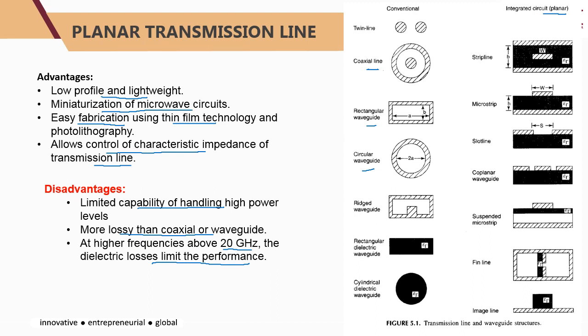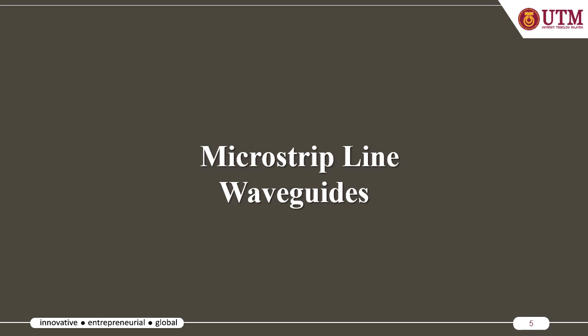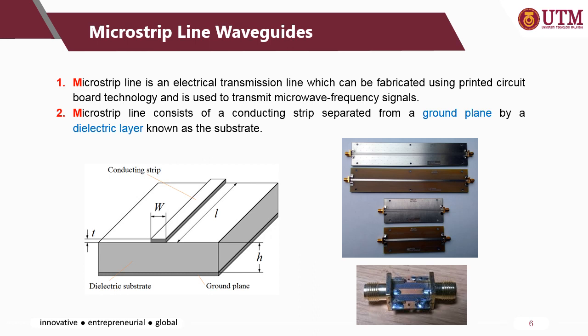We are about to discuss on the microstrip line, strip line, and co-planar waveguide as examples of planar transmission lines. The first one is the microstrip line waveguide. The planar transmission line is part of the waveguide, but since it is printed on the substrate layer, it is called a microstrip line or microstrip transmission line. The microstrip line is an electrical transmission line that can be fabricated using printed circuit board, and it is used to transmit microwave frequency signals.